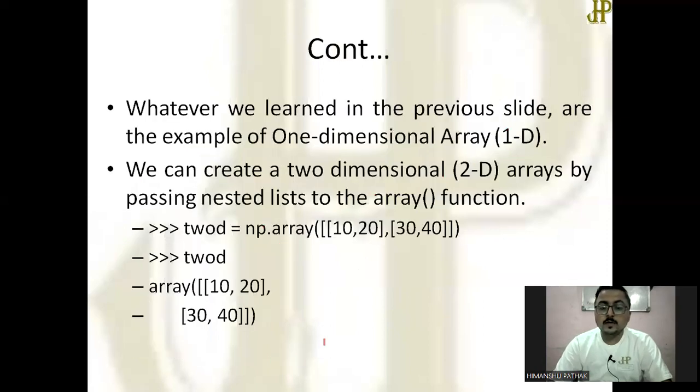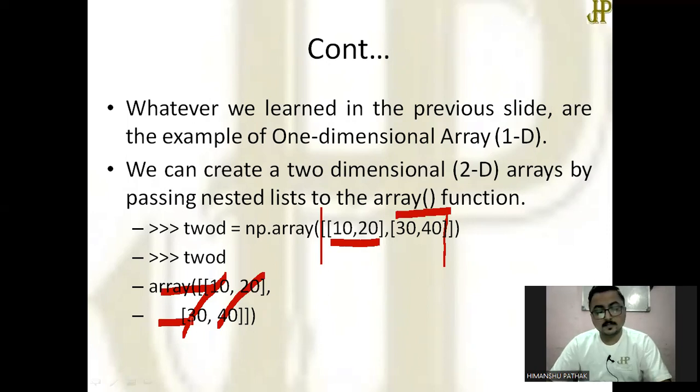This is a one-dimensional array. If you want to create two-dimensional array, you have to pass two elements like this. You have to supply comma between them and all the elements are covered by again a bracket. Here you can see that two-dimensional array: first column, second column, first row, second row. Like this, 3D array and n-d array can be created. But for you, for the 11th class student, there is only need to learn about how to create 1D array and 2D array.